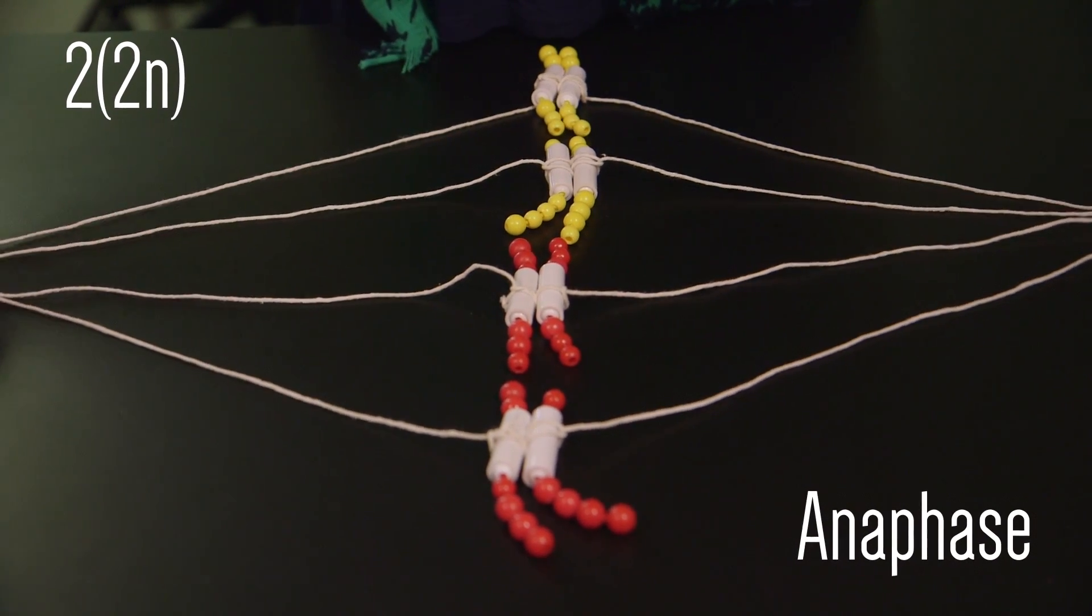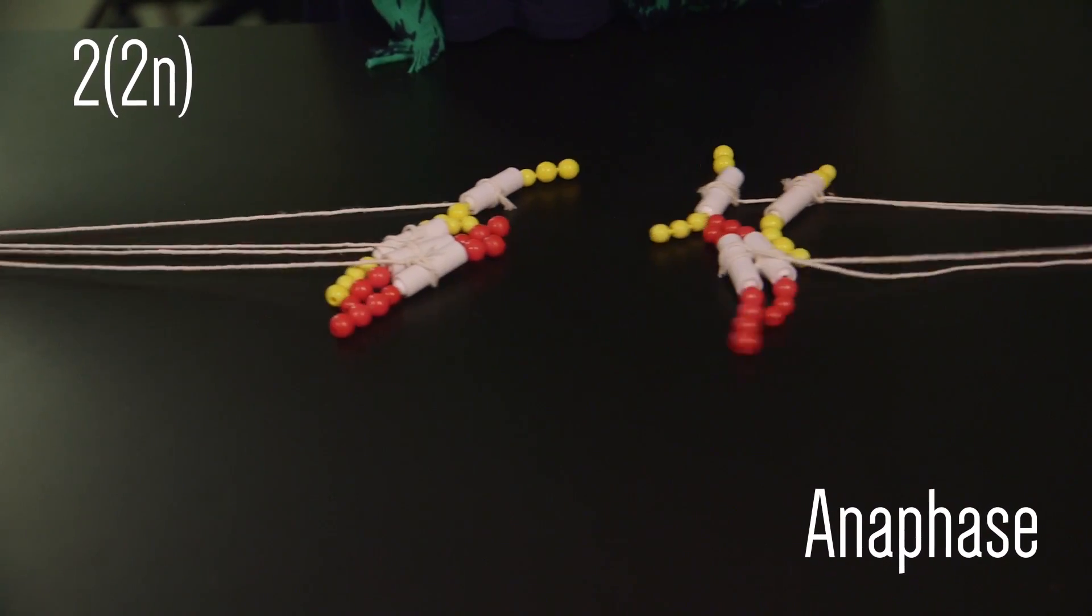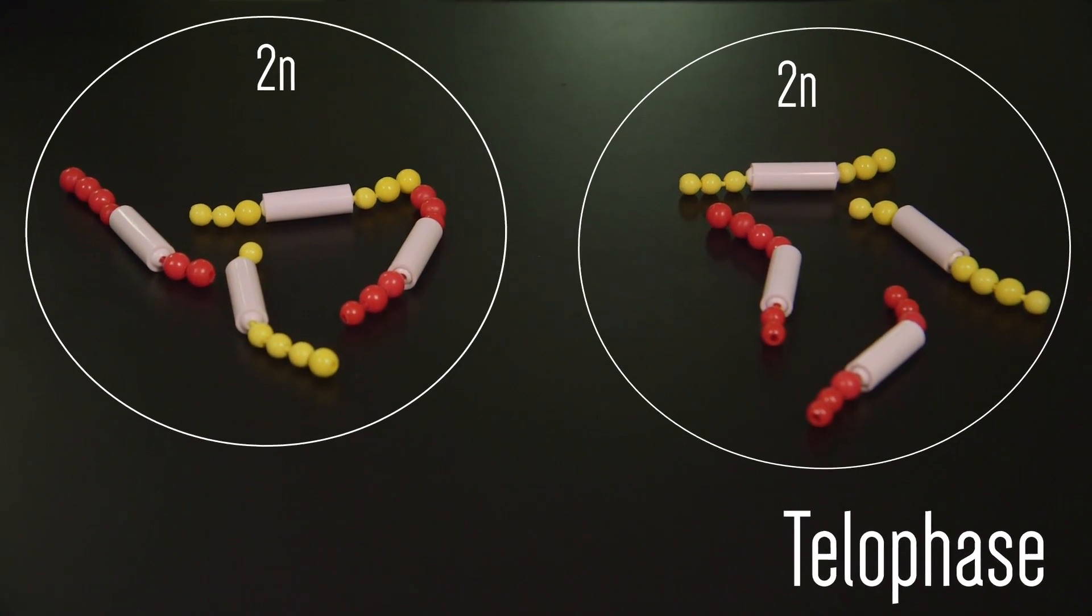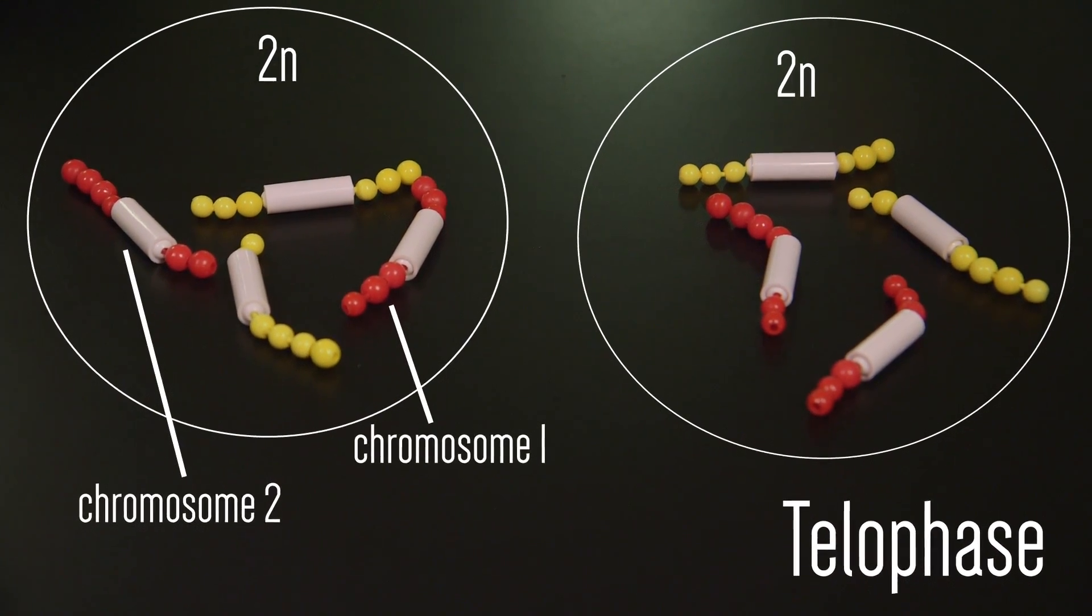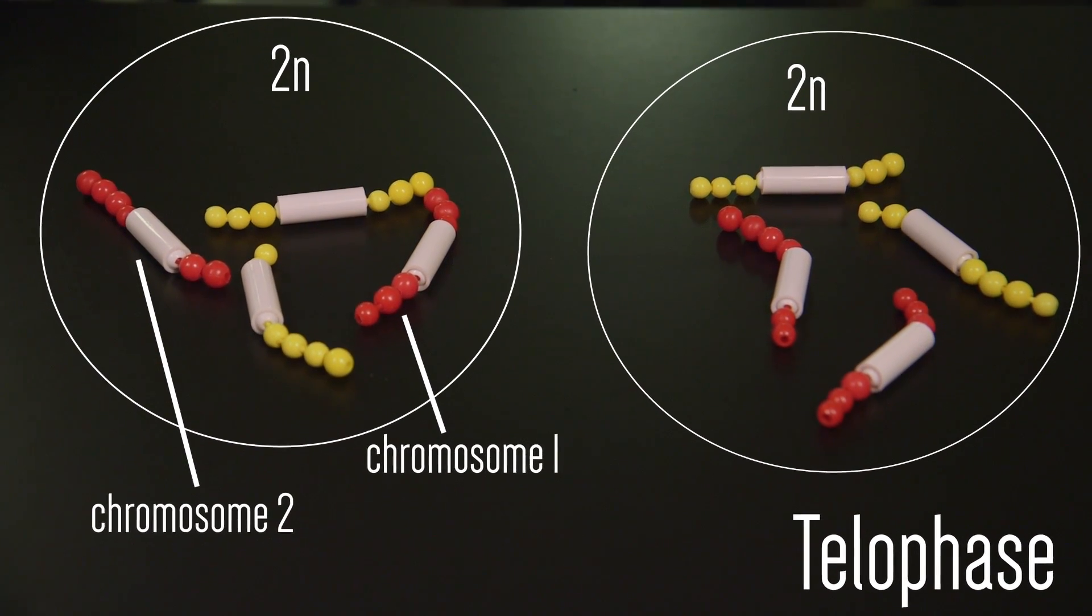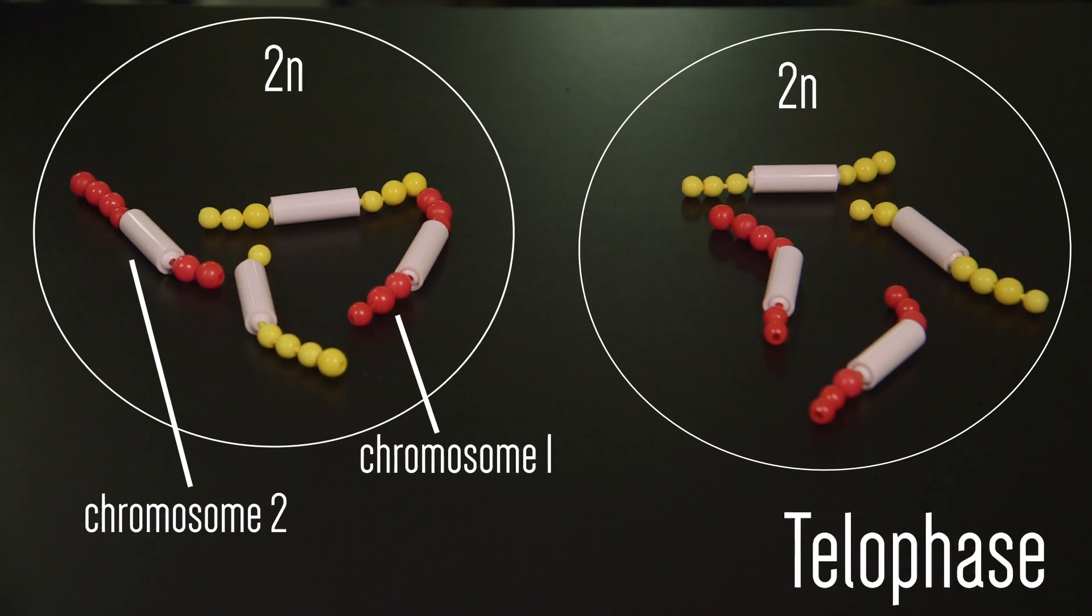Now with one person holding the spindle fibers on either side of the chromosomes, we will gently pull the strings to separate the chromatids, which will become new single chromosomes. At the end of mitosis, there are two daughter cells, each with the same number of chromosomes with which we began. The two cells are a result of the division of the cytoplasm, known as cytokinesis.